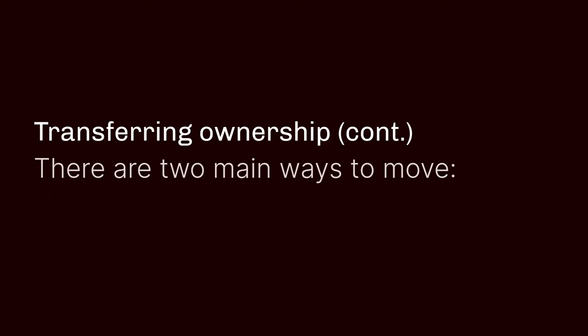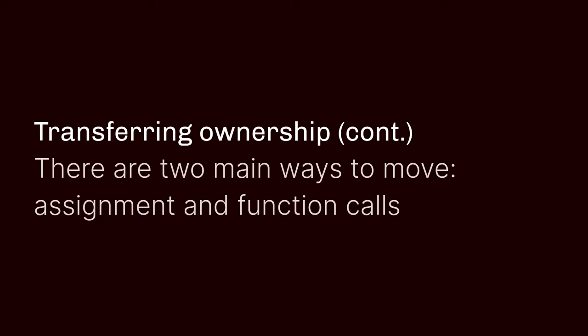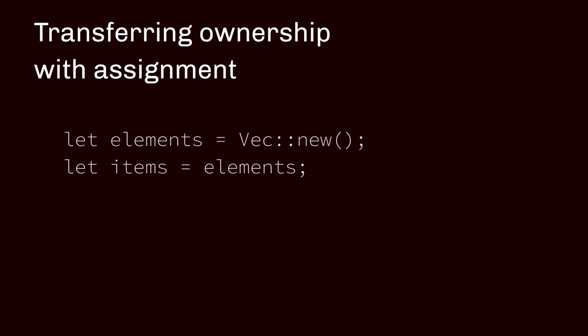There are two ways to move ownership. The first is assignment, and the second is function calls. When ownership is transferred through assignment, it might look as though the first variable would still be valid to use. In this two-line program, we have a variable named elements, and then we give it a new name called items. In most programming languages, both elements and items would be considered valid local variables. In Rust, you will only be allowed to use the new name because ownership has moved — elements is, in a sense, invalid.